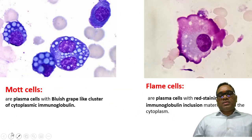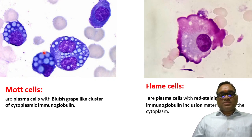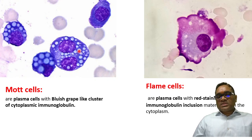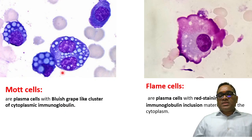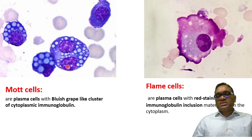Now you can see examples of Mott cells and flame cells. In the Mott cell, you can see these basophilic plasma cells with cluster-of-grape-like basophilic inclusions — these are bluish grape-like clusters of cytoplasmic immunoglobulin. In the nucleus, you can also notice a nuclear inclusion, which are the Dutcher bodies.